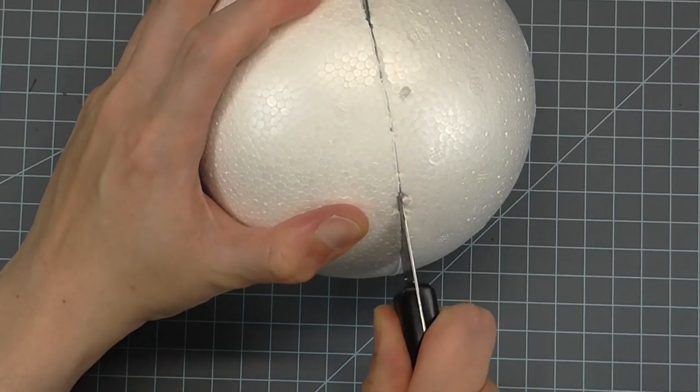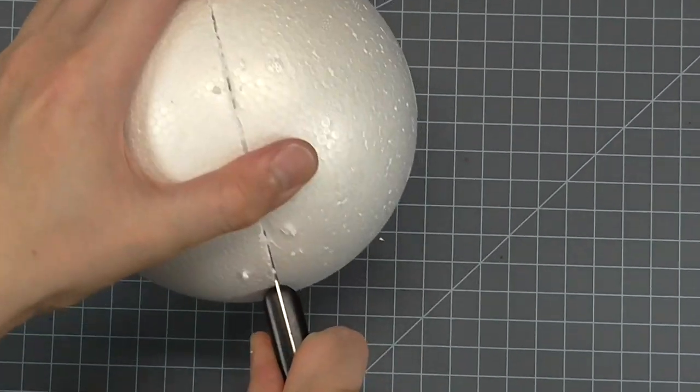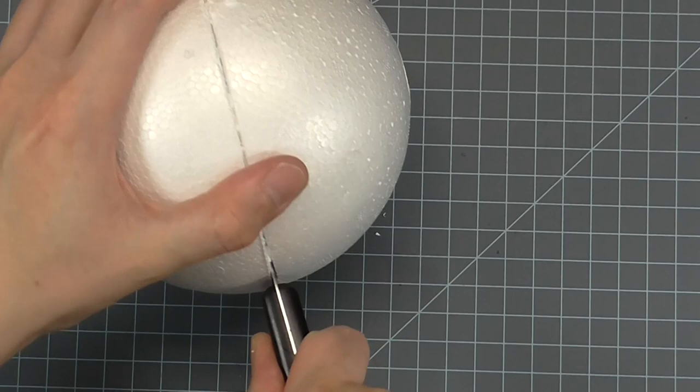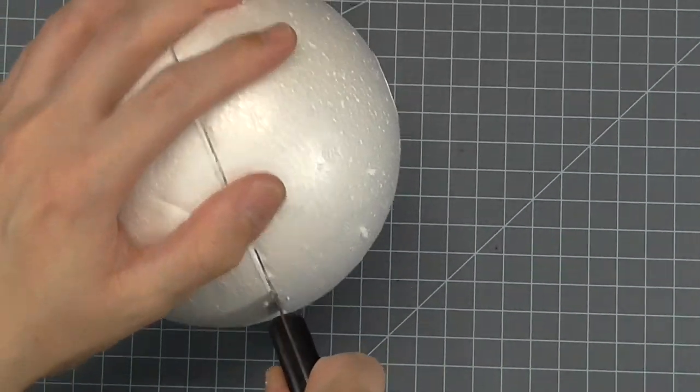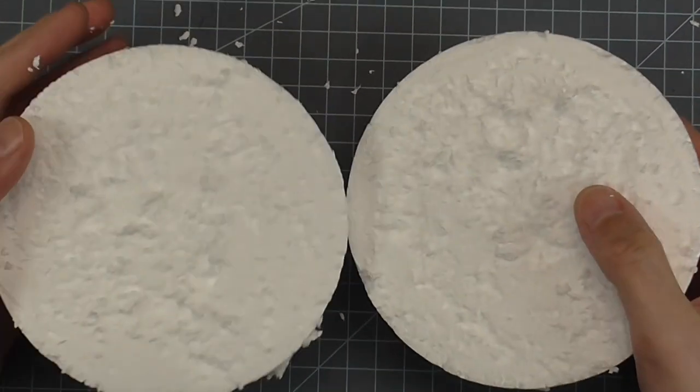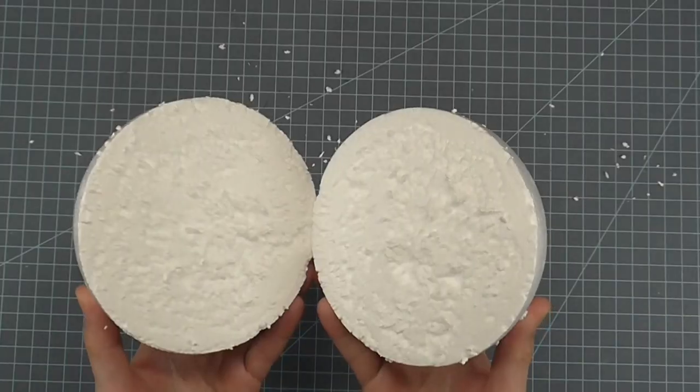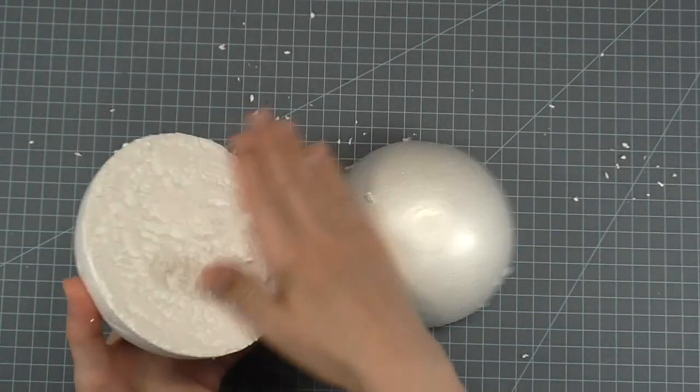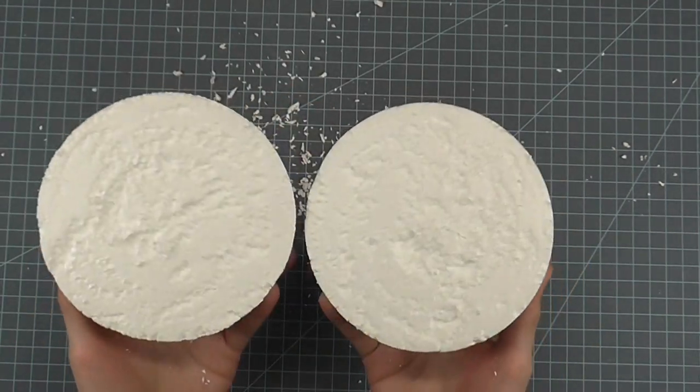Keep going around and around on the hemisphere line, making each cut a little deeper as you pass. Eventually, you'll break through to the center and have two halves. Dust off any crumbs that are on the inside of the hemispheres.